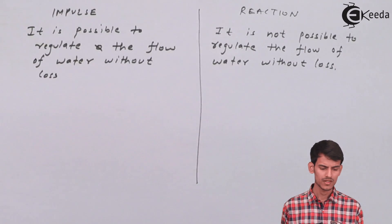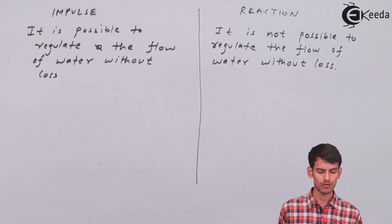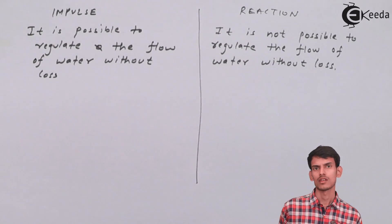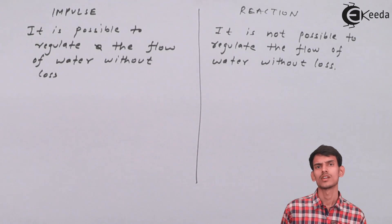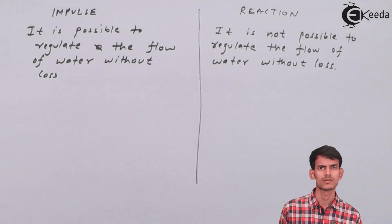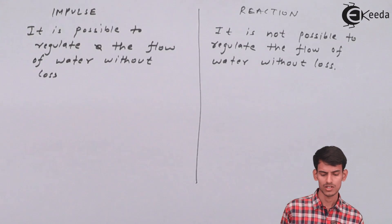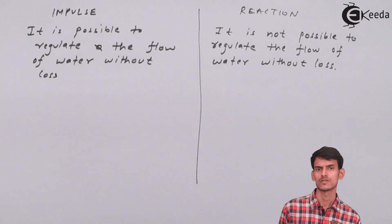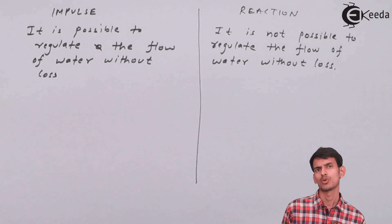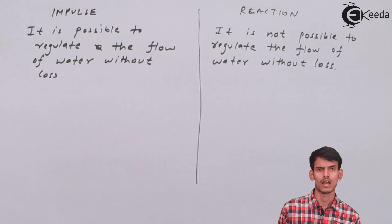The fifth difference: in an impulse turbine, it is possible to regulate the flow of water without any losses. You can control the discharge using the spear valve mechanism in a Pelton wheel. Whereas in a reaction turbine, it is not possible to regulate the flow without losses — if you try to control the flow rate, various losses occur in the reaction turbine.